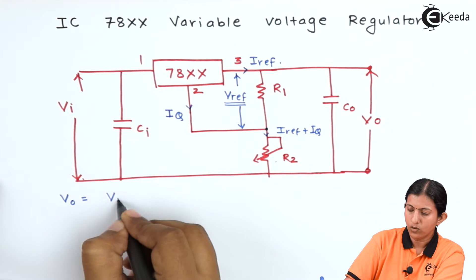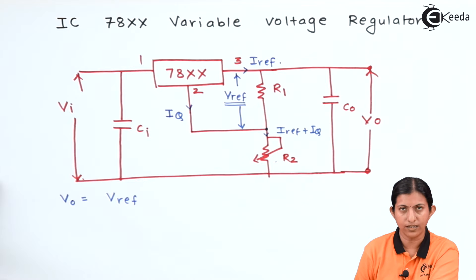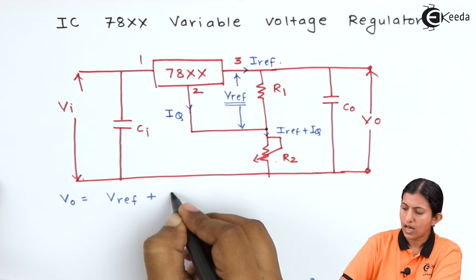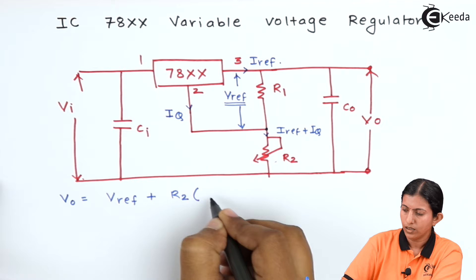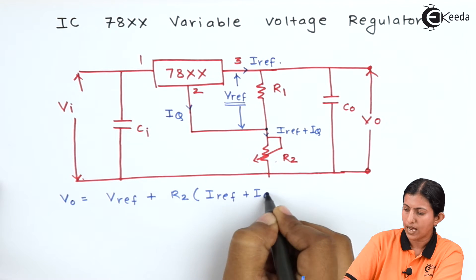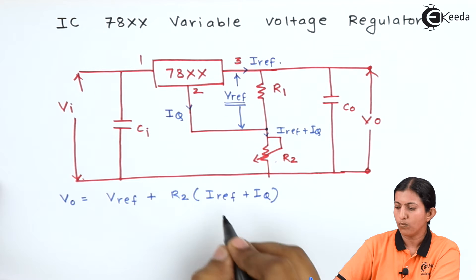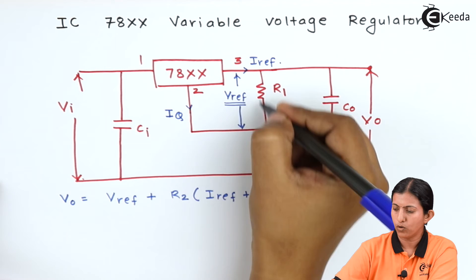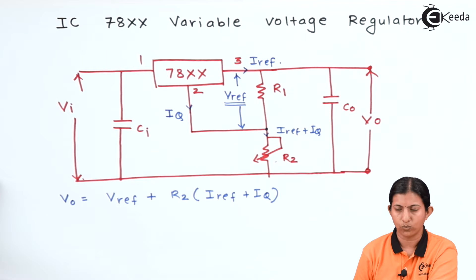Vo equals V reference plus R2 into I reference plus Iq. We have taken both values of the current because both currents will flow through resistor R2.